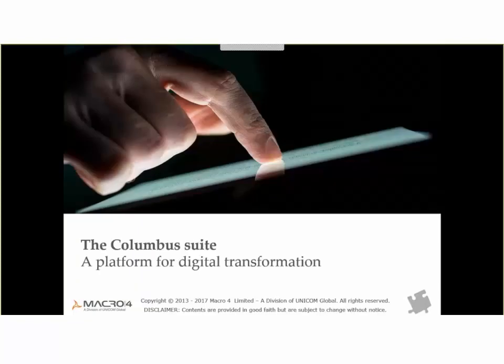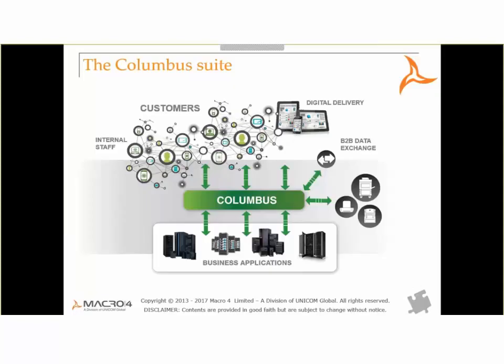We position Columbus as a platform for digital transformation. The main goal of the Columbus suite is to integrate with your core business applications with minimum fuss and minimum change to those systems — taking whatever raw data feeds or print streams they produce, and using Columbus to get the right data to the right person at the right time on the right device in the right format. It could be AFP print stream data, raw table data, ASCII, or EBCDIC data. We will take whatever your system outputs and convert it to the right format for delivery.